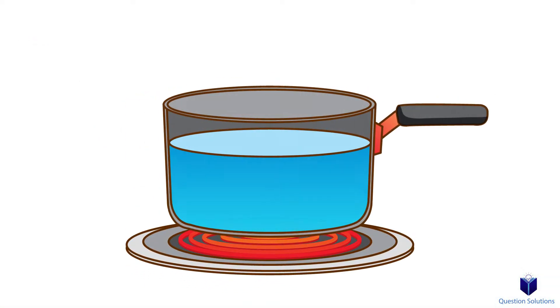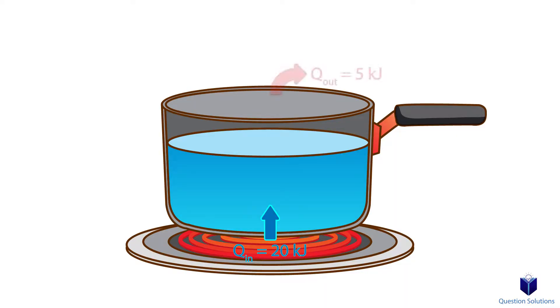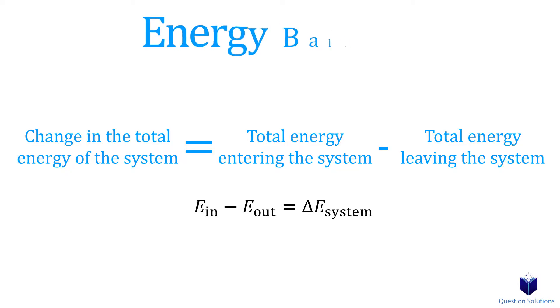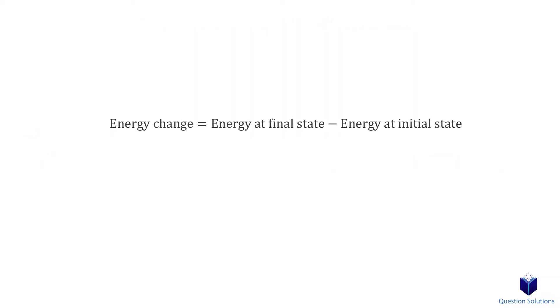If we have a system where energy enters and energy leaves, the net change in total energy of that system is equal to the difference between the energy that enters and the energy that leaves. In simple terms, the change in total energy of a system is equal to the total energy entering minus the energy leaving. We can represent that like this — it's called energy balance. If we wanted to figure out the energy change of a system, all we need to do is subtract the initial energy from the final energy.